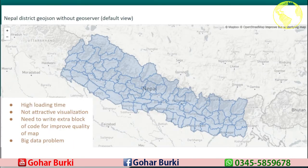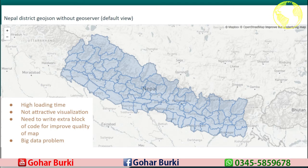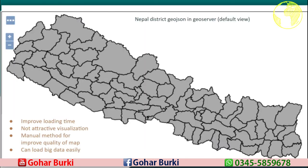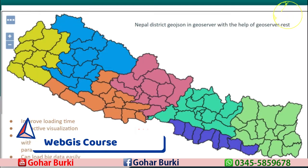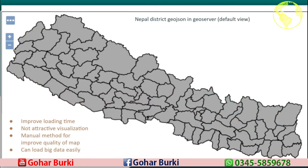Here you can see the map loaded directly in MapBox is not very attractive, and we need to write extra blocks of code to improve the map quality. It also takes a little longer time to load because it's JSON data and the browser faces difficulty handling large volumes of data quickly. We may face big data problems when loading GeoJSON directly into mapping libraries like OpenLayers. The GeoServer default view improves loading time because it provides WMS, and while visualization is also not very attractive, it can handle big data easily. We can make the GeoServer map look better, but we need to upload an SLD file separately and then configure the link between the layer and the style file.